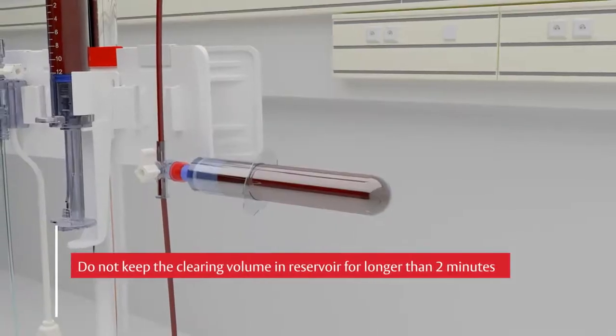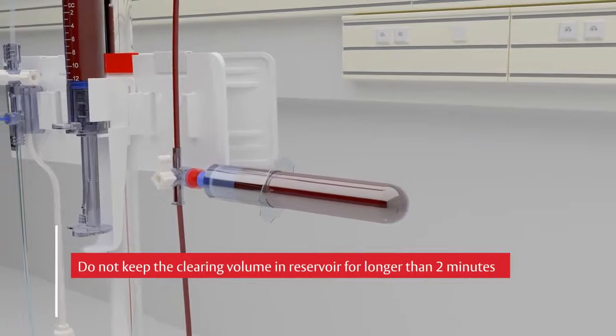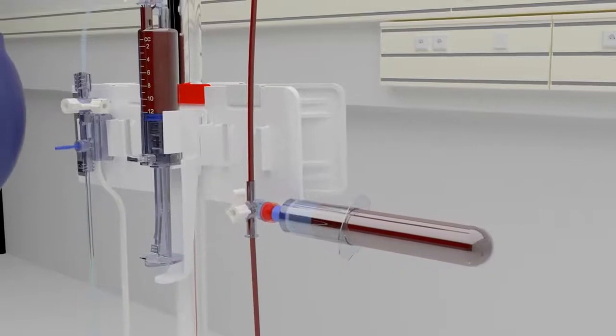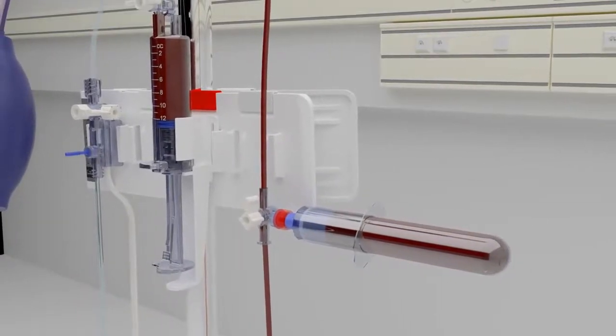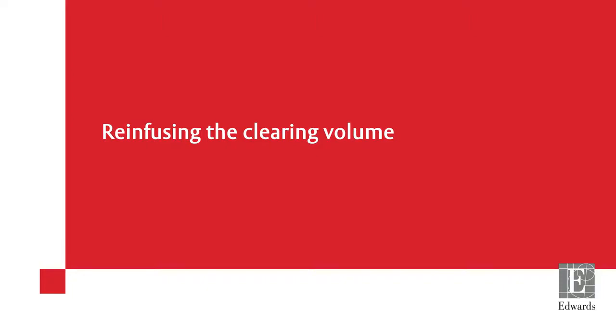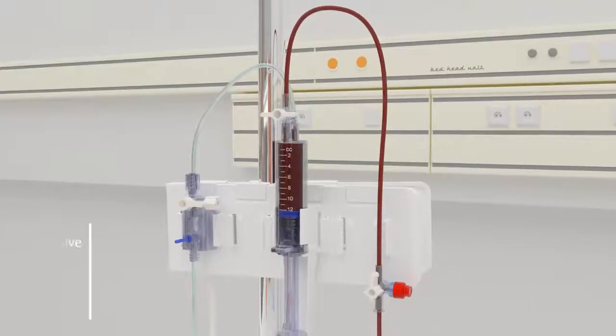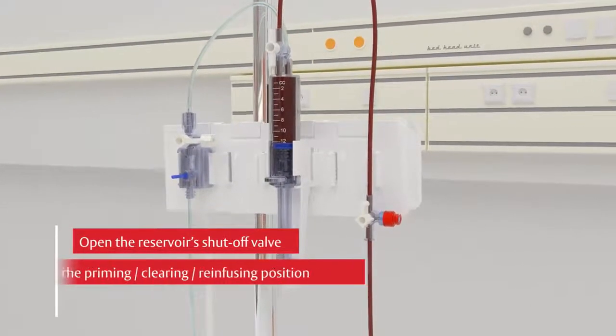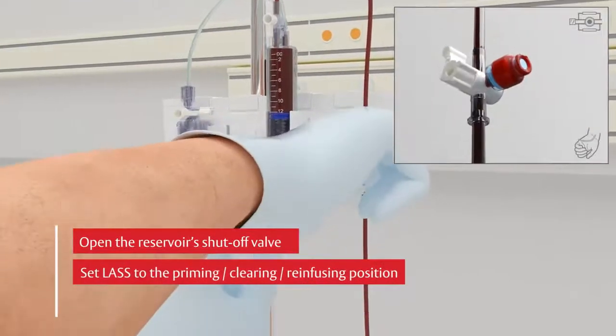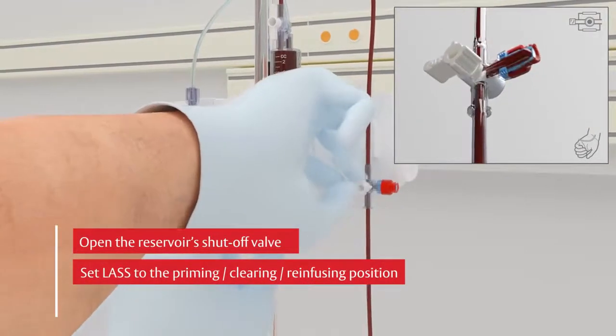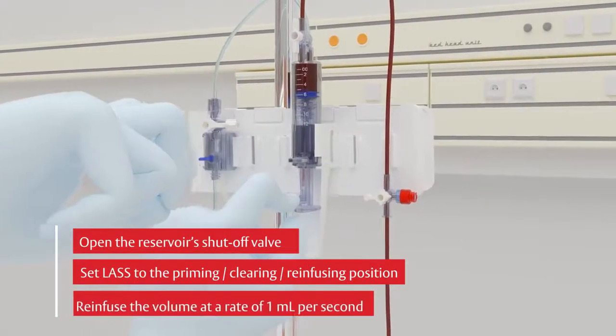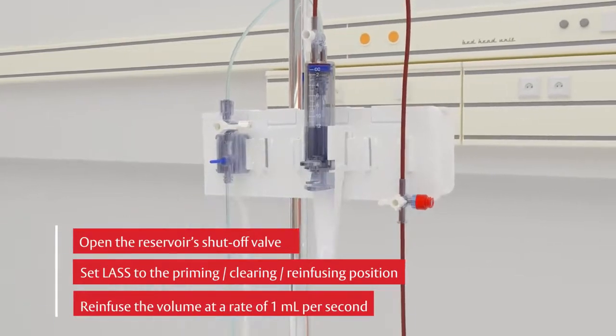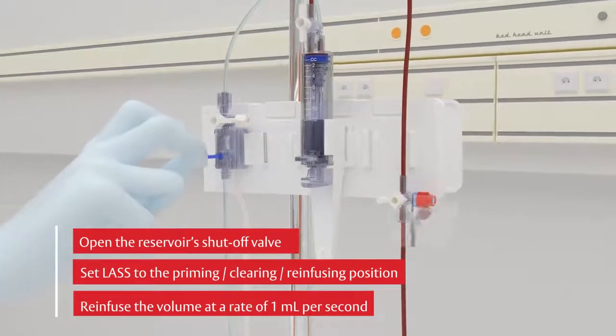The clearing volume should not remain in the reservoir for longer than two minutes. Once all samples have been drawn, it is now time to re-infuse the clearing volume. Open the reservoir shutoff valve by turning the handle parallel to the tubing. Turn the handle on the sample site to the priming clearing re-infusing position. Push the reservoir plunger to re-infuse the clearing volume until it stops and firmly latches in the closed position. The recommended time to re-infuse is approximately one milliliter per second.